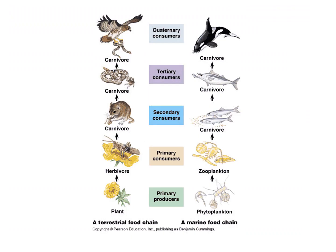Here's another example of food chains or pyramids. We've got our different kinds of consumers, and this one goes all the way up to quaternary consumers — our fourth consumers.